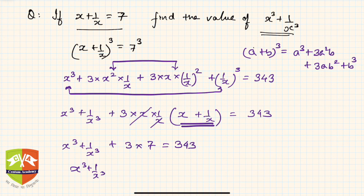So hence x cube plus 1 upon x cube will be equal to 343 minus 21, which is equal to 322. So x cube plus 1 by x cube is 322.